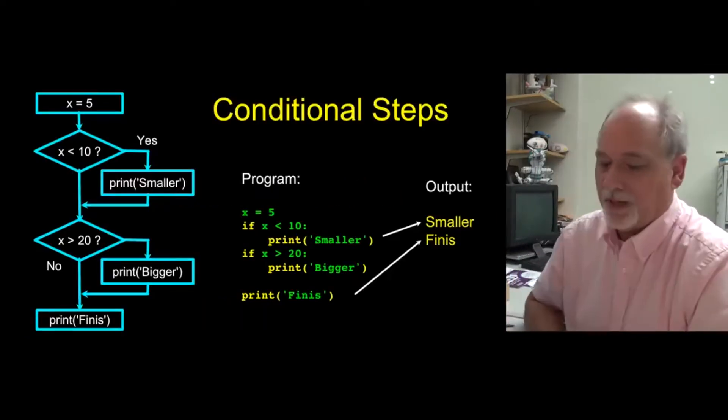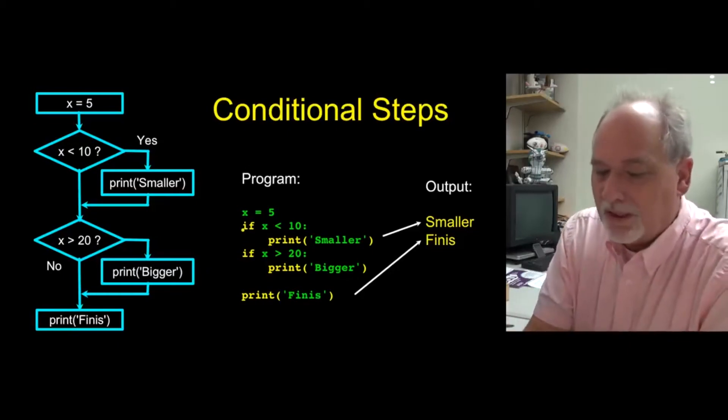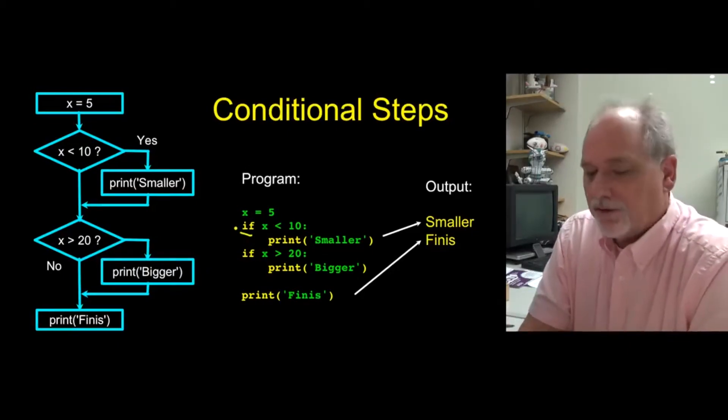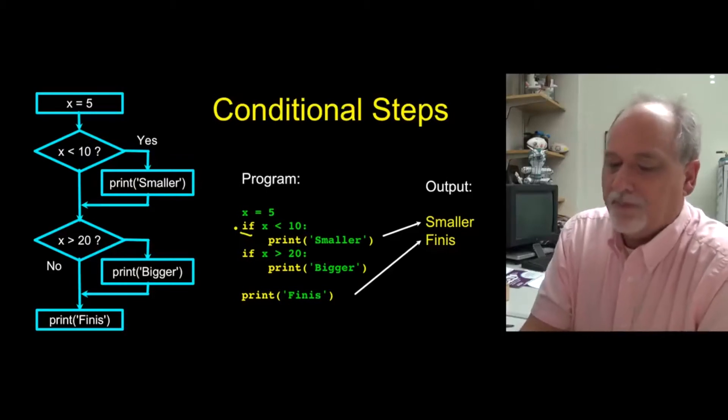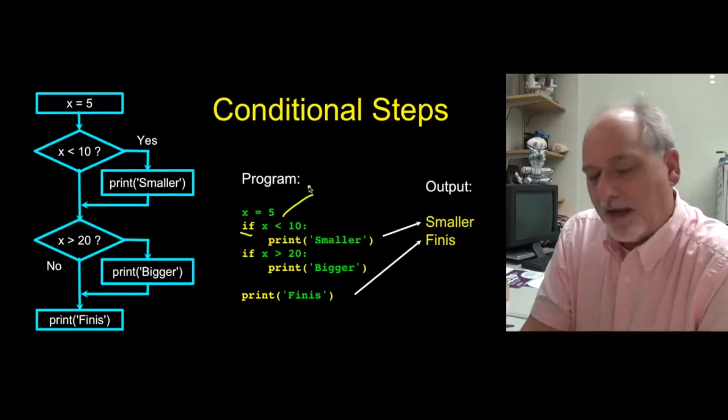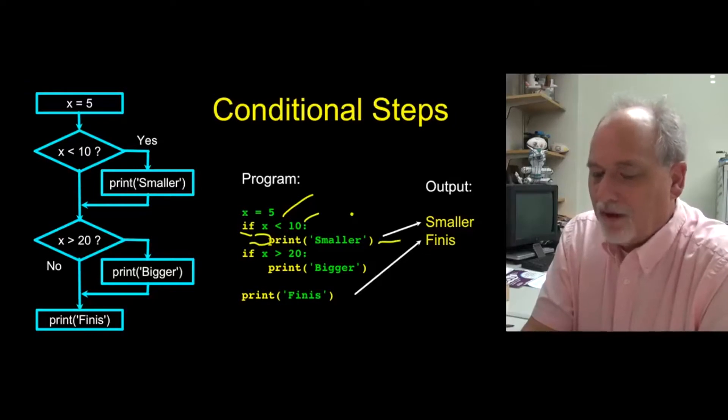So the conditional steps in Python are pretty straightforward. The keyword that we're going to use is the if statement, and so if is a reserved word. The if statement has as part of it a question that it asks, and this is asking if x is less than 10. The colon is the end of the if statement, and then we begin an indented block of text. The way this works in this particular thing is this line is the conditional line. If the question is true, the line executes, and if the question is false, the line is skipped.